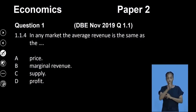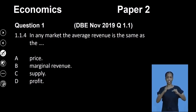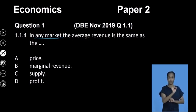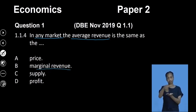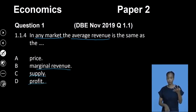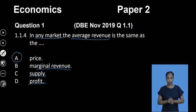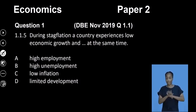Question 1.14 says: in any market, the average revenue is the same as... This applies to both perfect and imperfect markets. Option A says our price. B says our marginal revenue. C says supply. D says profit. The correct answer is A — the average revenue is the same as our price for all market structures.